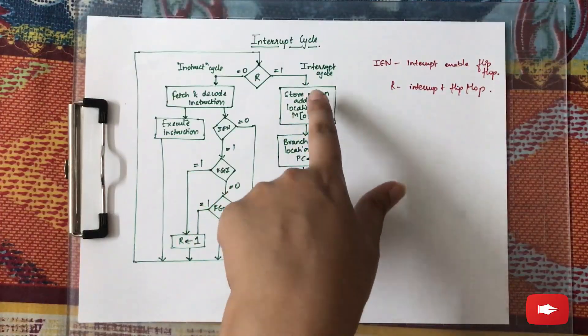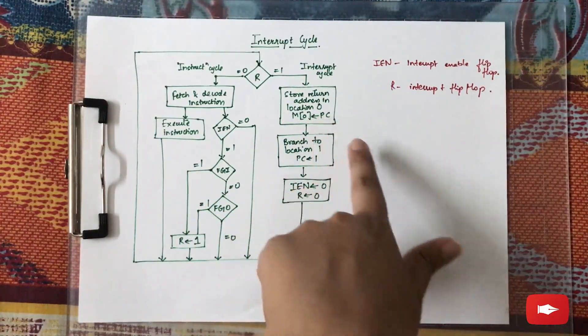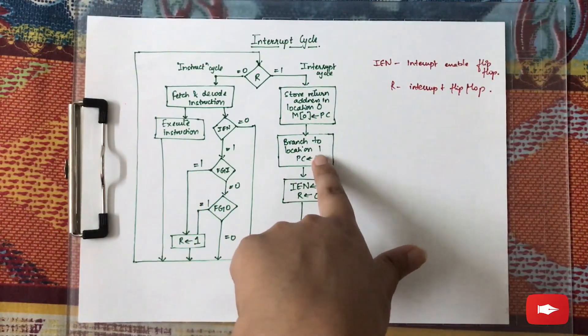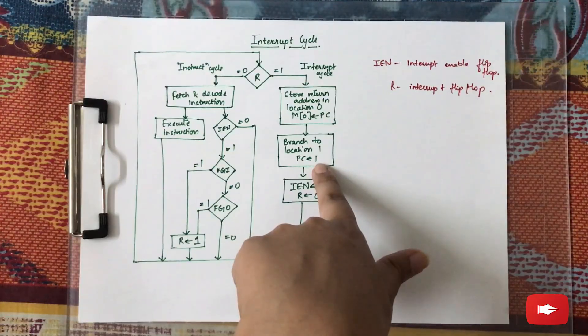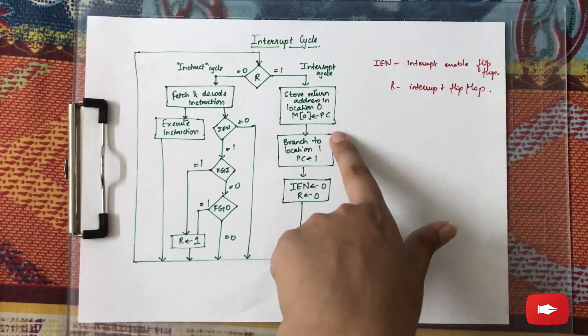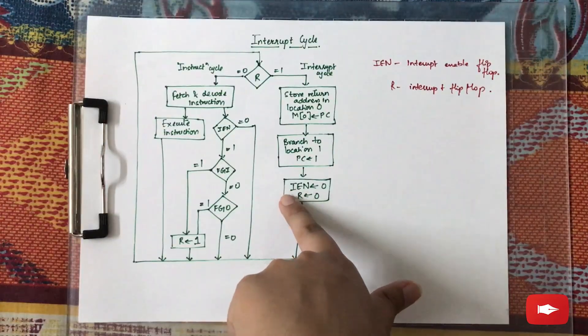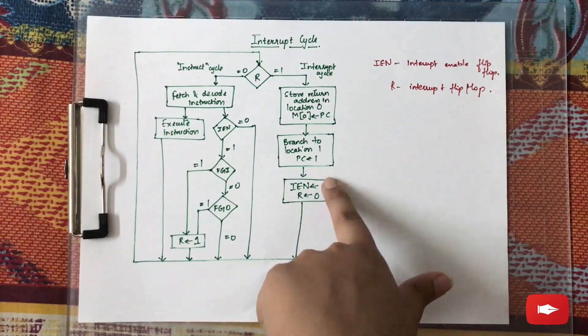Branch to location one - this is the new instruction or the interrupt to be handled. And then when it is handled, both the value of IEN and R are set to zero.